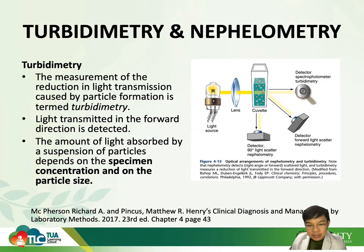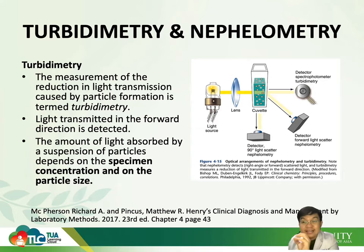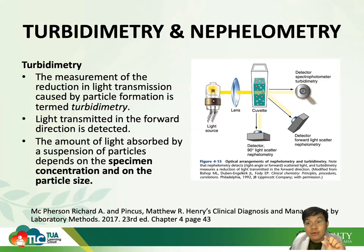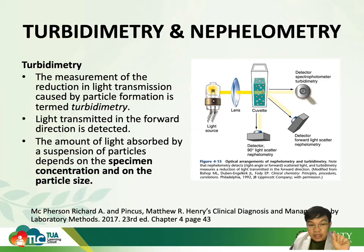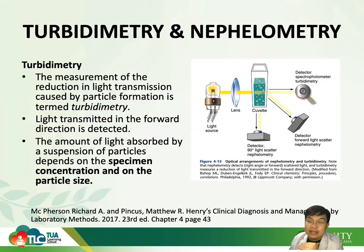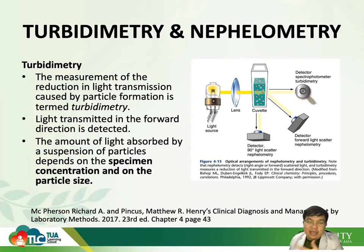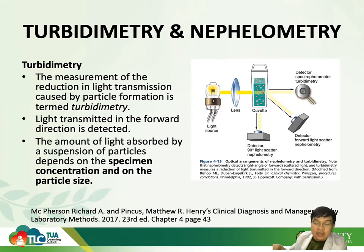In contrast, in turbidimetry, we measure the reduction of light transmission — how much light is being blocked or covered by your antigen-antibody complex or other proteins. Looking at the illustration from the light source, you have the lens, the cuvette, and then after the cuvette, the detector — similar to the spectrophotometer, and also your turbidimetry. The orientation of the components is similar to your spectrophotometer. The light transmitted in the forward direction is the one being detected — we're not measuring light scattered at any angle, just measuring linearly at 180 degrees.